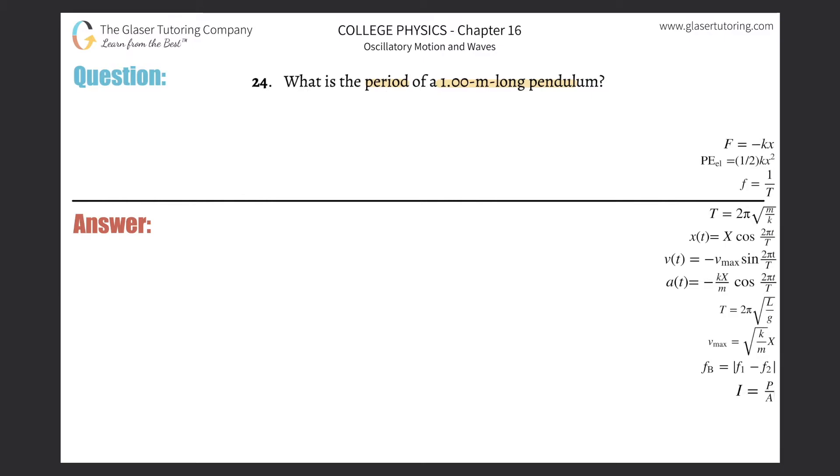So the formula for the pendulum here is going to be t, or the period of oscillation of a pendulum, will equal 2 pi multiplied by the square root of the length of that pendulum's arm divided by g.